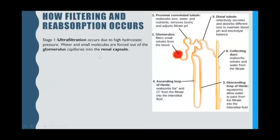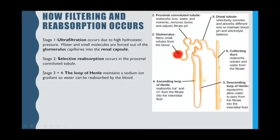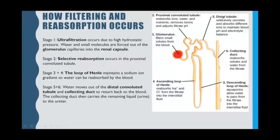Here's an overview of the filtering and reabsorption. Step one: in the glomerulus, ultrafiltration of water and small molecules occurs due to high pressure, forcing them into the renal capsule. The glomerular filtrate then passes into the proximal convoluted tubule where 85% of that filtrate gets reabsorbed back into the blood. The loop of Henle maintains the sodium ion gradient to enable water reabsorption by osmosis. Finally, in the distal convoluted tubule and collecting duct, further water is removed by osmosis and reabsorbed into the blood, and any remaining liquid forms urine.